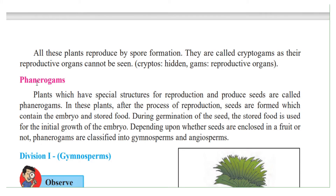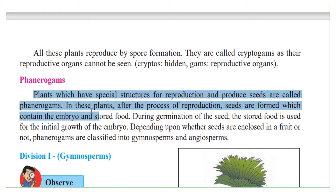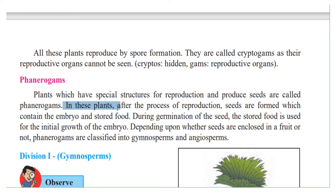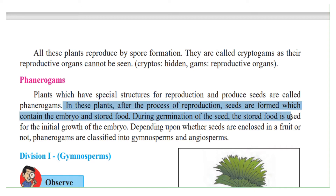Now let us study about Phanerogams. Plants which have special structures for reproduction and produce seeds are called Phanerogams. Cryptogams do not have well-developed reproductive organs — they are hidden. But in Phanerogams, we see that they have a well-developed reproductive system. After the process of reproduction, seeds are formed which contain the embryo and stored food. During germination of the seed, the stored food is used for the initial growth of the embryo.